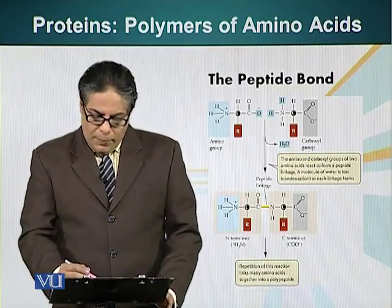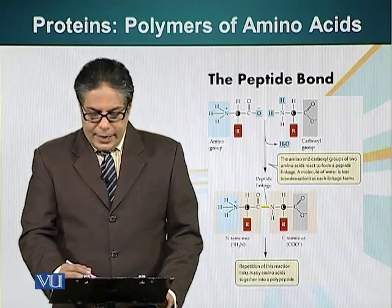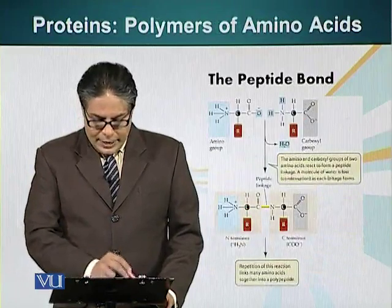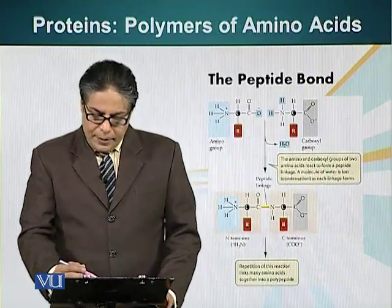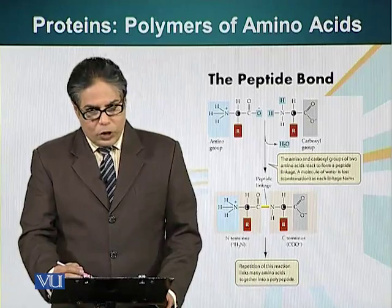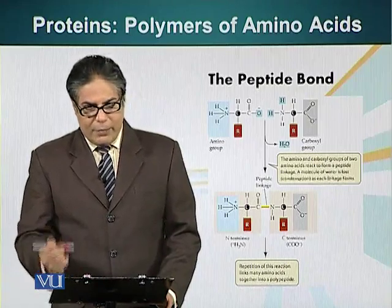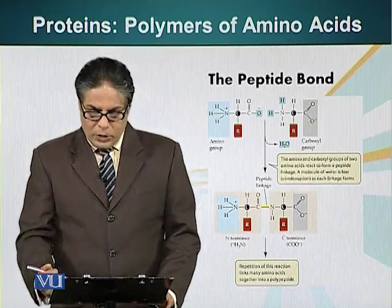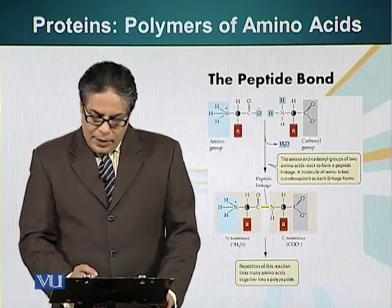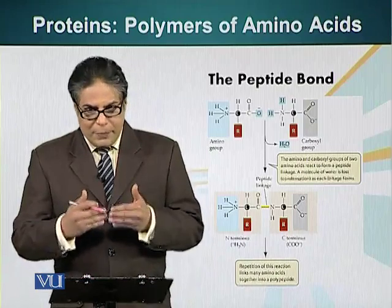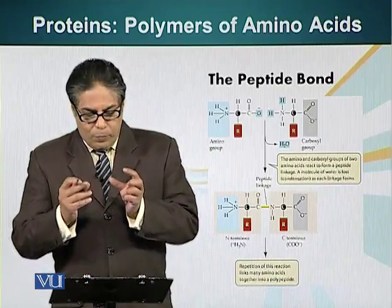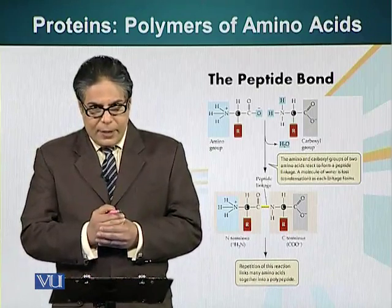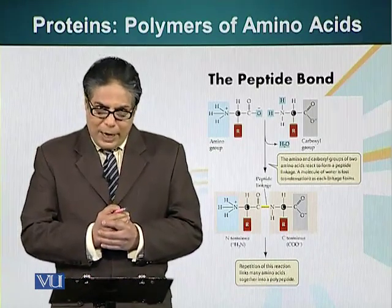The carboxyl group of one amino acid forms a bond — the carbon present in the carboxyl group forms a bond with the nitrogen atom of an adjacent amino acid. When this bond forms, a water molecule is lost. So the carbon-nitrogen bond is basically the bond holding two monomers of a protein together. This bond is called a peptide bond.